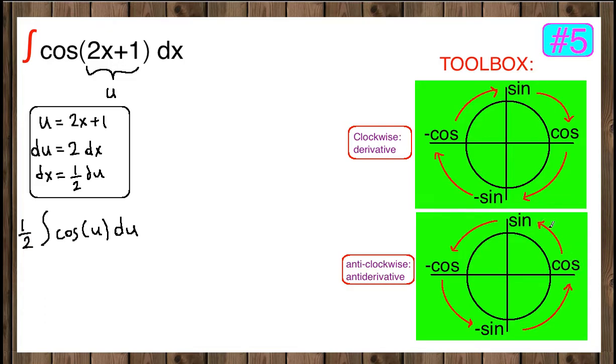Here is a useful toolbox for you. Cosine is in the positive x-direction, negative x-direction is negative cosine, positive y-direction is sine, and negative y-direction is negative sine. If you go in the clockwise direction, you get the derivatives of each trigonometric function.